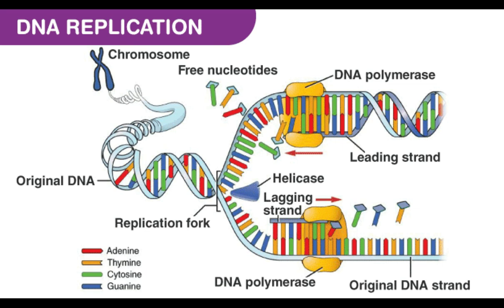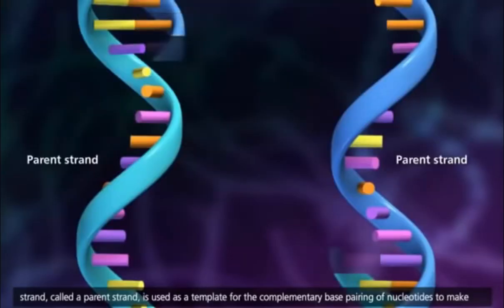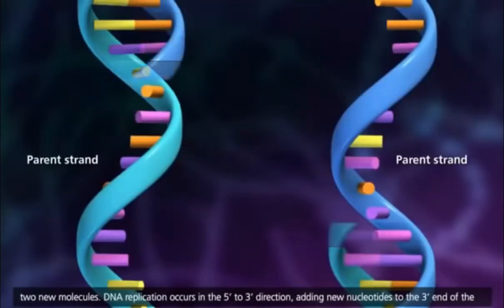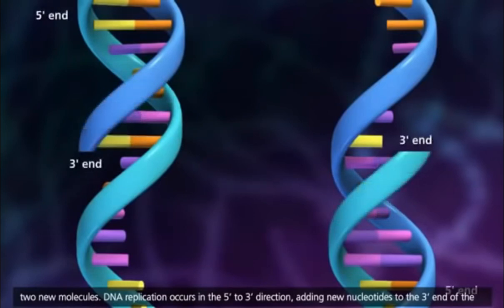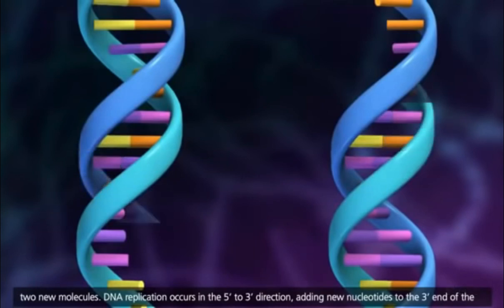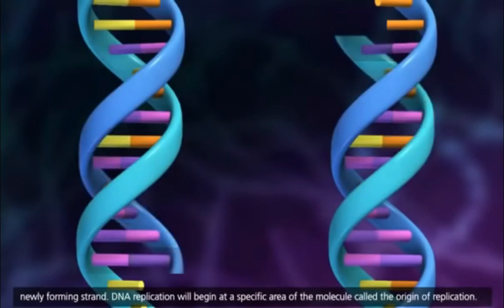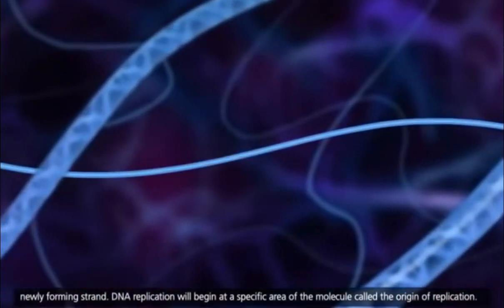Therefore, the new strands must be elongated by different mechanisms. The leading strand, which elongates towards the replication fork, is built up simply by adding nucleotides continuously to its growing 3' end. In contrast, the lagging strand, which elongates away from the replication fork, is synthesized discontinuously as a series of short segments that are later joined together.